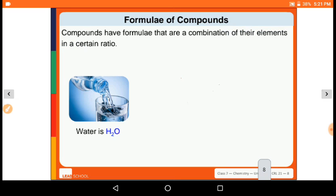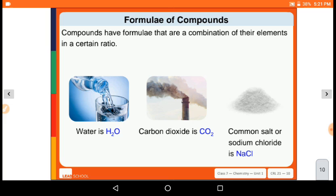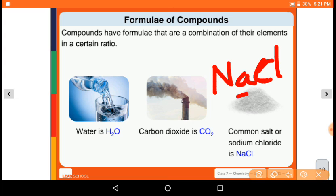Compounds have formulas that show the combination of their elements in a certain ratio. Water is H2O. Carbon dioxide is CO2. Common salt or sodium chloride, which we use, can be written like this: capital N for sodium and chloride combined as NaCl, capital N, small A, capital C, and small L.